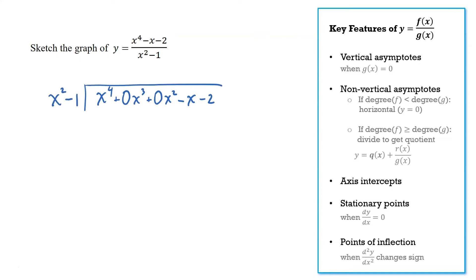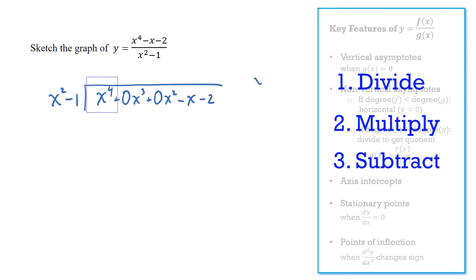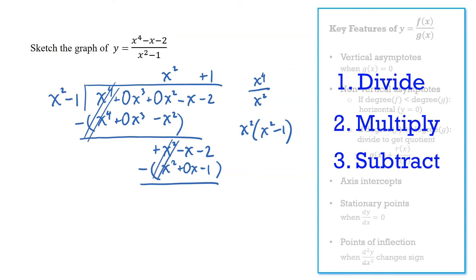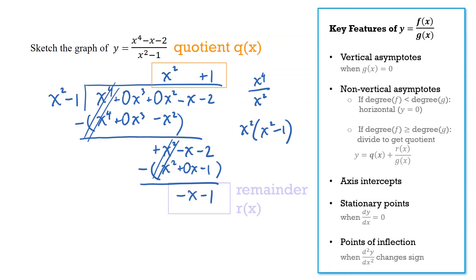And my process is divide, multiply, subtract. So first step, x to the 4 divided by x squared is x squared. Write that at the top and then multiply x squared by x squared minus 1. Write that underneath. And then we subtract to work out our remainder. In this case our remainder would be positive 1 x squared. Then we bring our last two terms down and repeat the process. So x squared divided by x squared is 1. Multiply and subtract. And that's it, we have our quotient and remainder.